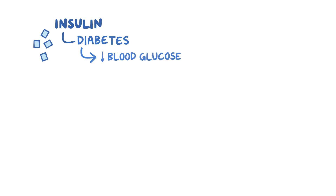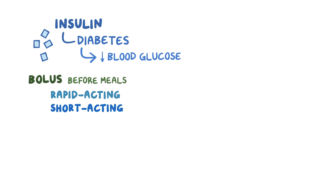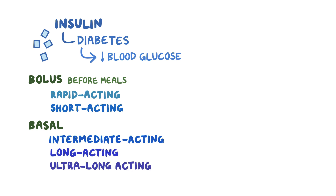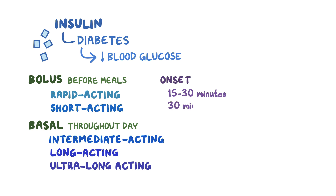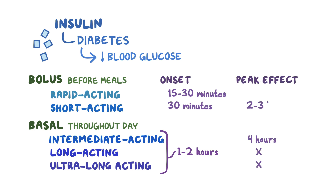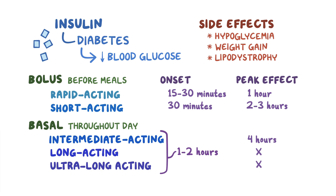As a quick recap, insulins are given to people with diabetes to lower blood glucose. Bolus insulins, like rapid-acting and short-acting insulins, are given before a meal to control post-meal hyperglycemia. Basal insulins, like intermediate-acting, long-acting, and ultra-long-acting insulins, are given to control the fasting glucose level throughout the day. Rapid-acting insulins have the fastest onset at 15 to 30 minutes, followed by short-acting insulin which starts working at 30 minutes. Intermediate-acting, long-acting, and ultra-long-acting starts working between 1 to 2 hours. Only intermediate, short, and rapid-acting insulins have peak effects at over 4 hours, between 2 and 3 hours, and 1 hour respectively. Major side effects of insulin include hypoglycemia, weight gain, and lipodystrophy at the injection site.